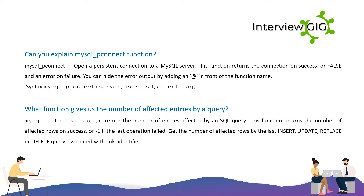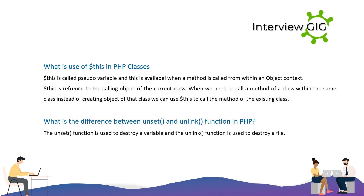What function gives us the number of affected entries by a query? mysql_affected_rows() returns the number of entries affected by an SQL query. This function returns the number of affected rows on success, or -1 if the last operation failed — covering the last INSERT, UPDATE, REPLACE, or DELETE query associated with link_identifier.